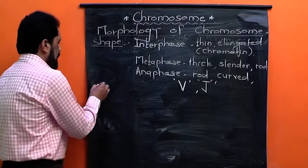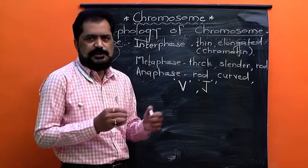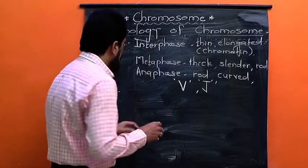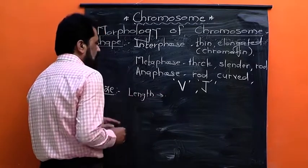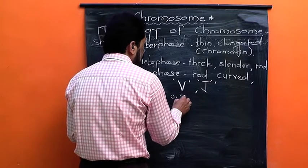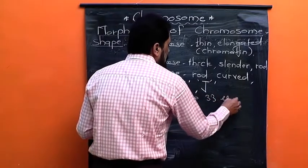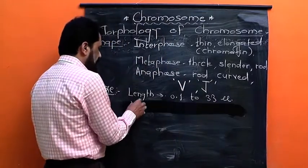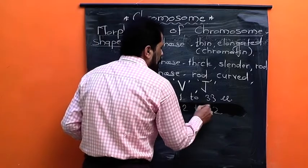Regarding the size of chromosomes, it also varies from species to species. But on an average, the length of a chromosome ranges from 0.1 to 33 microns, and the width ranges from 0.2 to 2 microns.